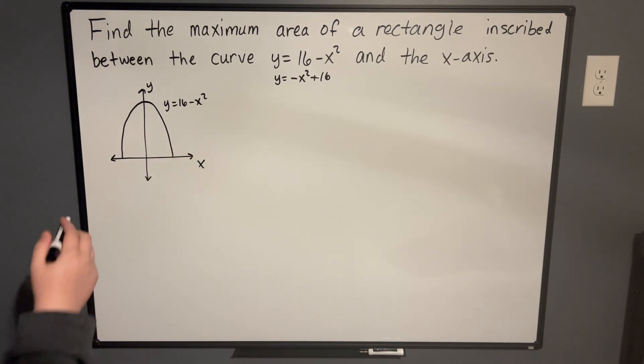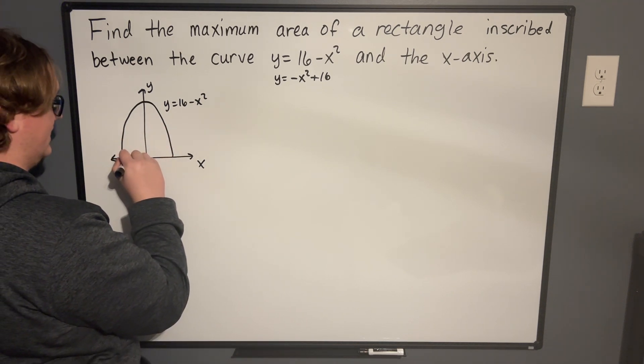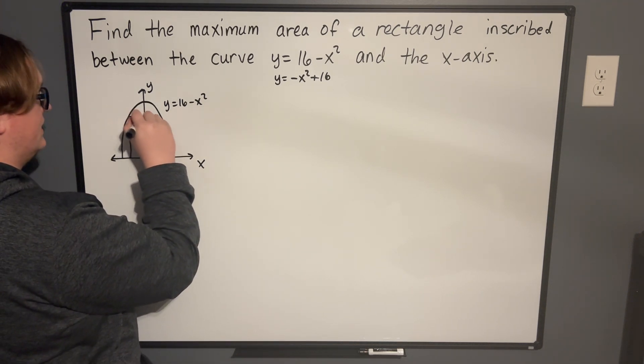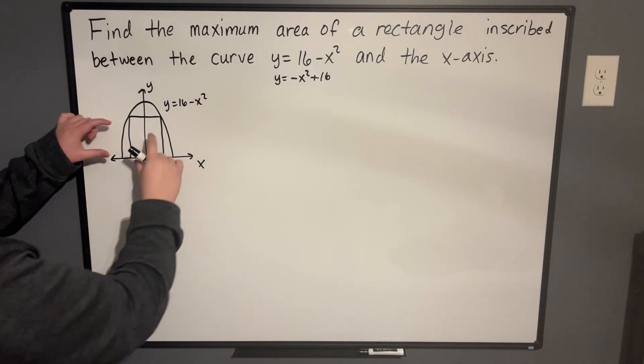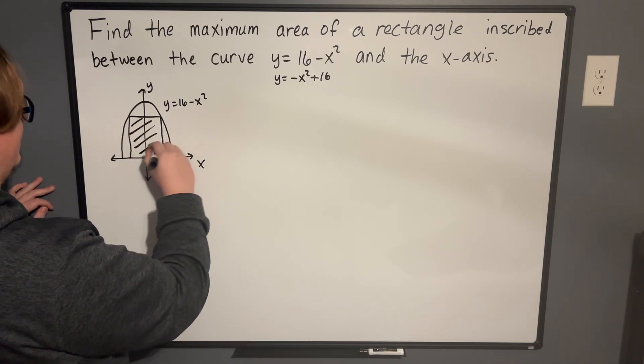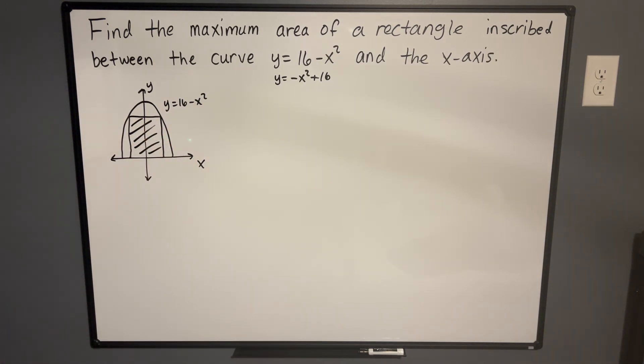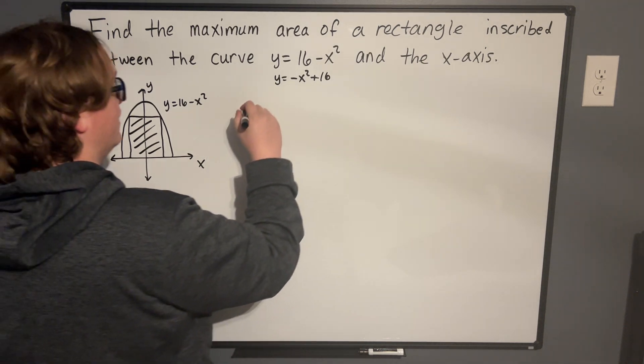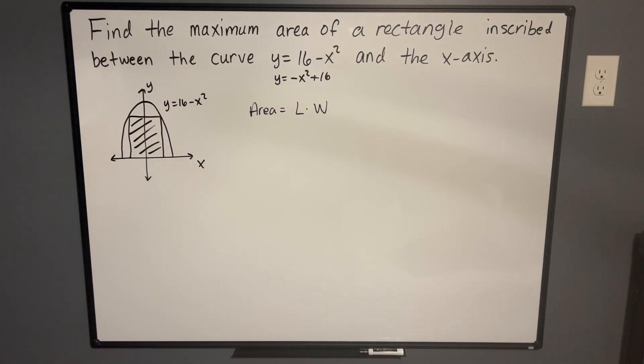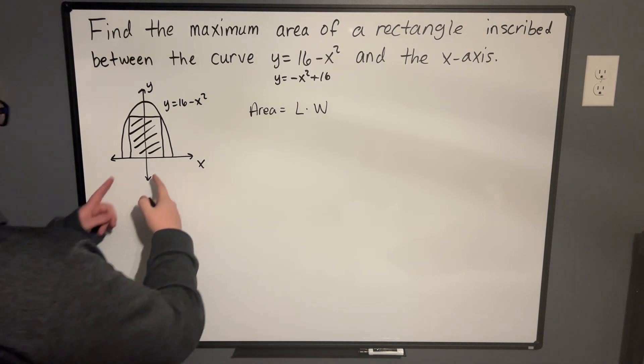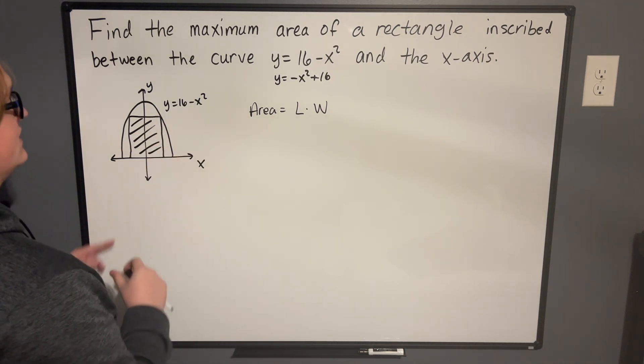So what we're looking for is a rectangle that's inscribed in this area. As an example of what that would look like, it would be something like this. We want to figure out what the maximum area of a rectangle that happens to be in here is. So when we do these optimization problems, we need to first figure out the formula that we need. We know that if we're looking for the area of a rectangle, the area of a rectangle is going to be equal to the length times the width. Or in this case, we can almost call it width times height, but really it's the same thing.